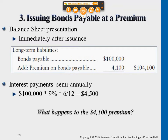When we journalize the interest entry, if it's at par, interest expense equals the cash interest we're paying. If it's at a discount, interest expense equals cash plus a portion of discount on bonds payable. If it's at a premium, the $4,500 would not be the same as interest expense either — interest expense will be lower than cash interest, because earlier when we issued the bond we collected more up front.